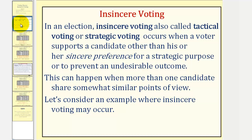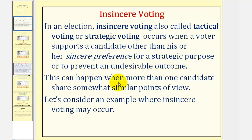In an election, insincere voting, also called tactical voting or strategic voting, occurs when a voter supports a candidate other than his or her sincere preference for a strategic purpose or to prevent an undesirable outcome. This can occur when more than one candidate share somewhat similar points of view.